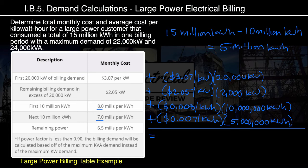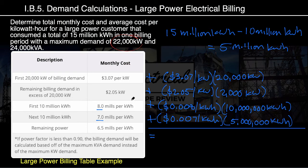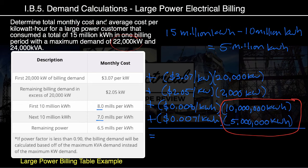Before adding everything up, let's double-check both our demand and our power consumption. Our billing demand is 22,000 kW. The two demand tiers — 20,000 kW plus 2,000 kW — add up to 22,000 kW. We've accounted for every kW of our demand. For energy charges: 10 million kWh plus 5 million kWh adds up to our total consumption of 15 million kWh. We've accounted for all of our consumption.